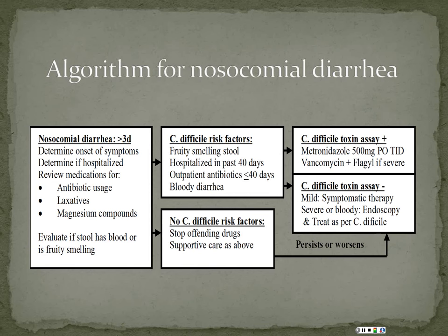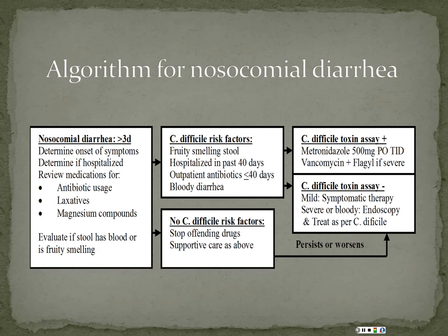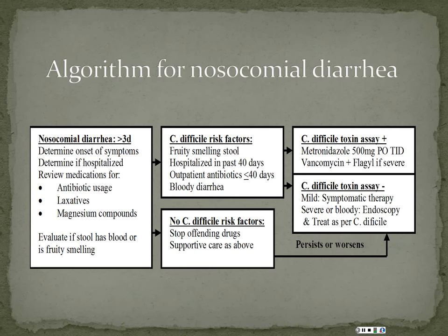For a patient with nosocomial diarrhea who has been in the hospital more than 48-72 hours, the further out from admission, the more certain we are it's not community-acquired. The first step is to do a medication review — look for high-risk antibiotics like Augmentin, which causes diarrhea in 25% of patients, or Clindamycin. Check for laxatives, stool softeners, magnesium compounds, or anything causing loose stool, and consider stopping or altering those medications first.